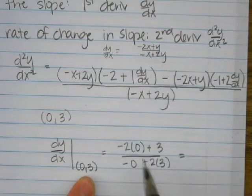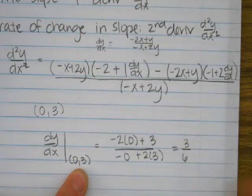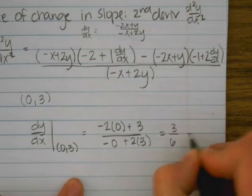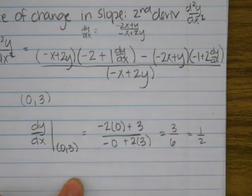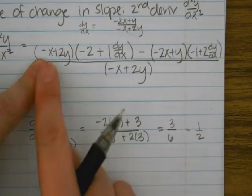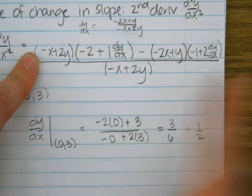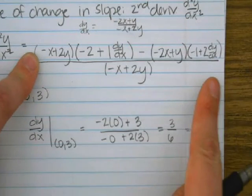And that is going to give me 3 on the top and 6 on the bottom, which means that dy dx is 1 half. So now what I can do is I can just walk through and plug 0 in for all the x's, and plug 3 in for all the y's, and plug 1 half in for dy dx.